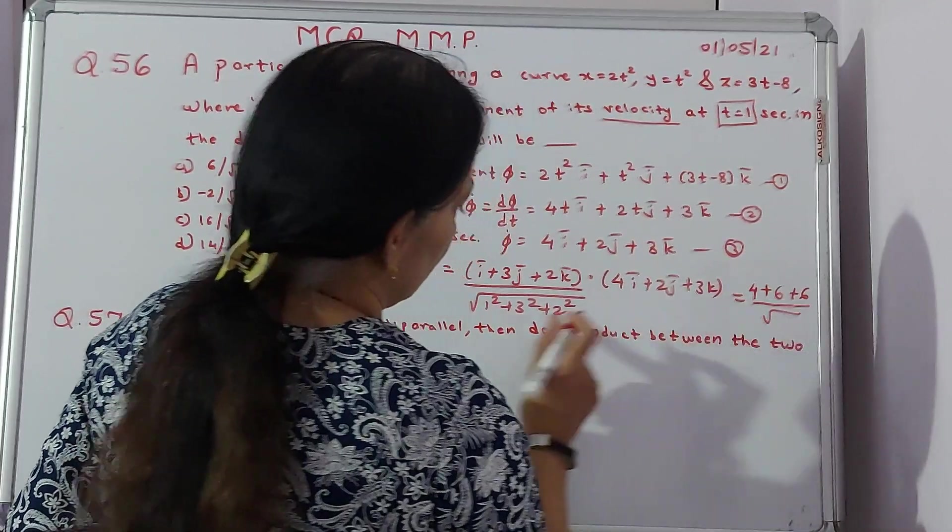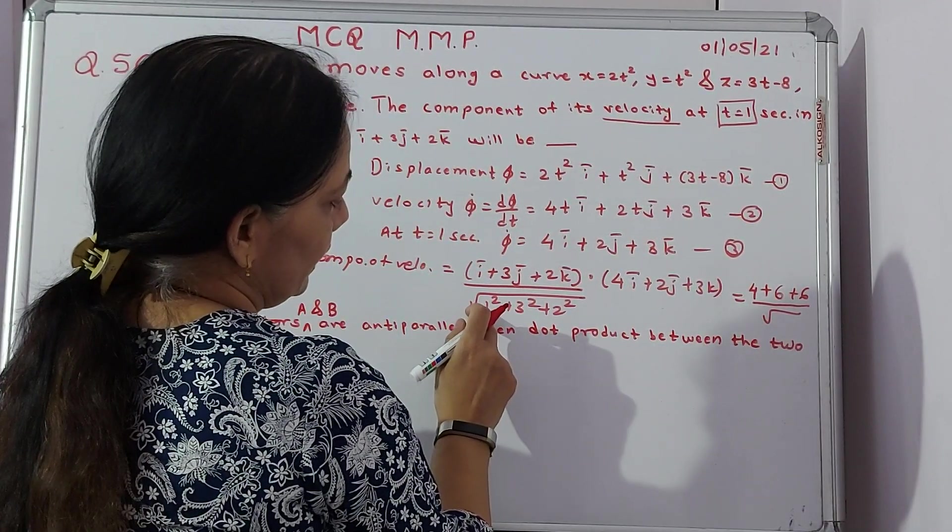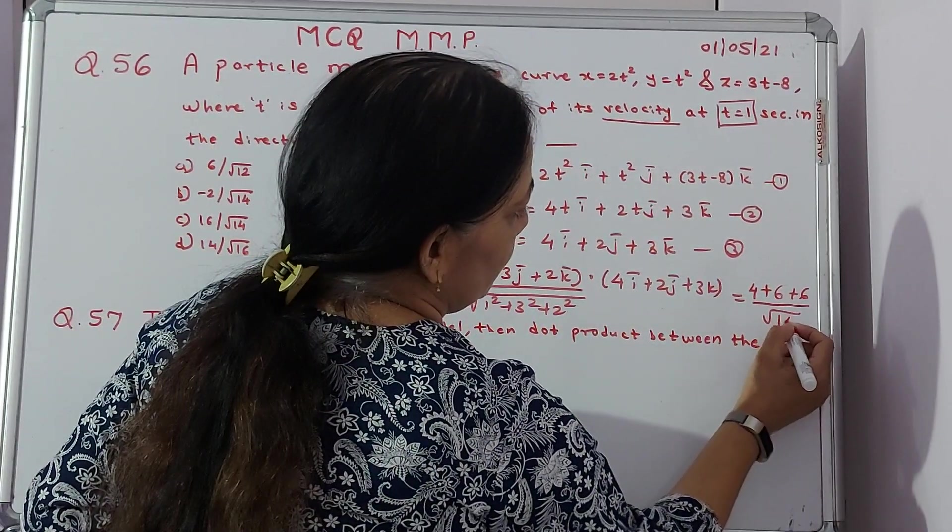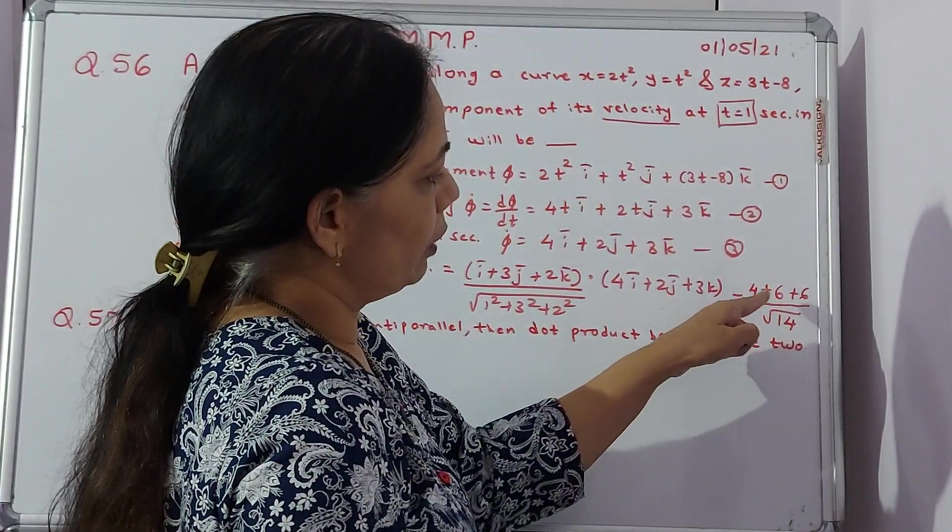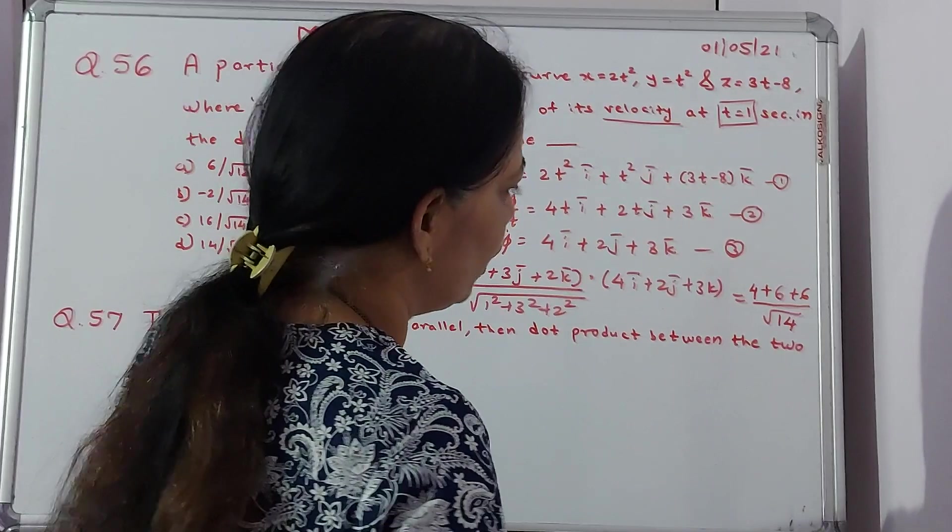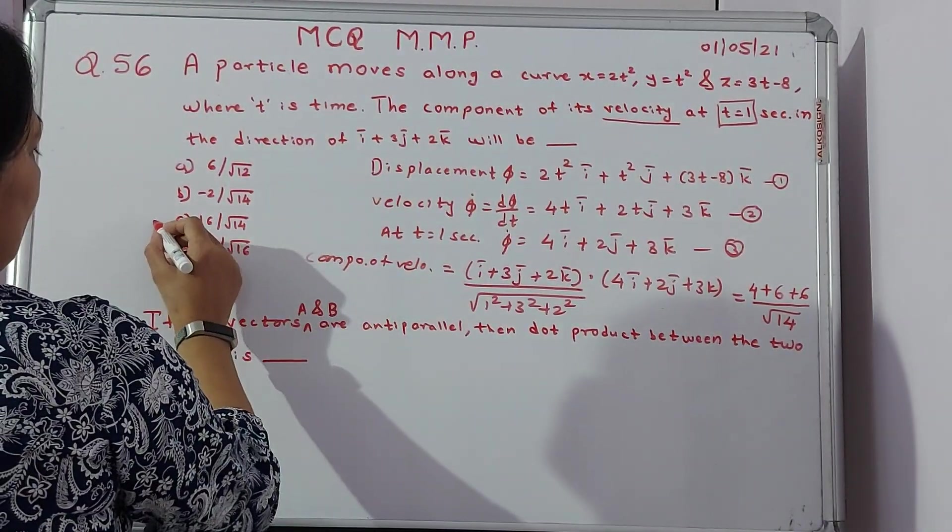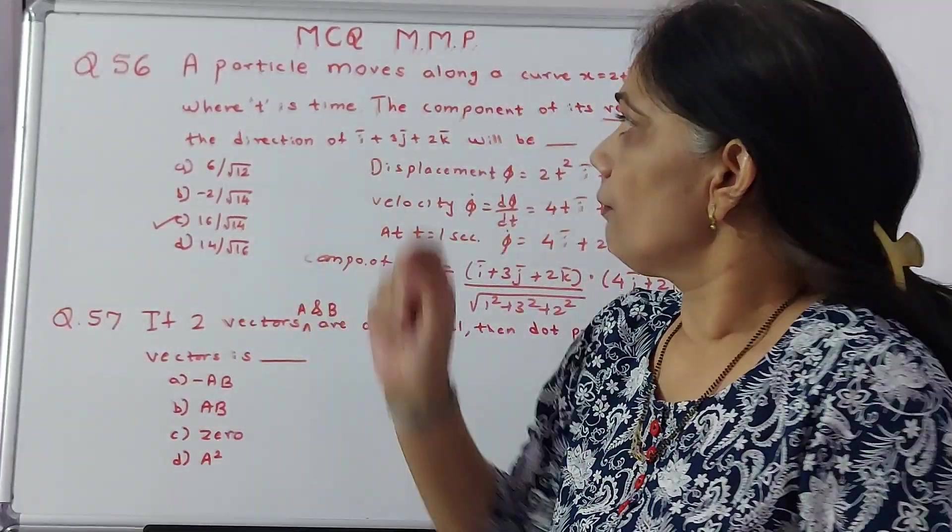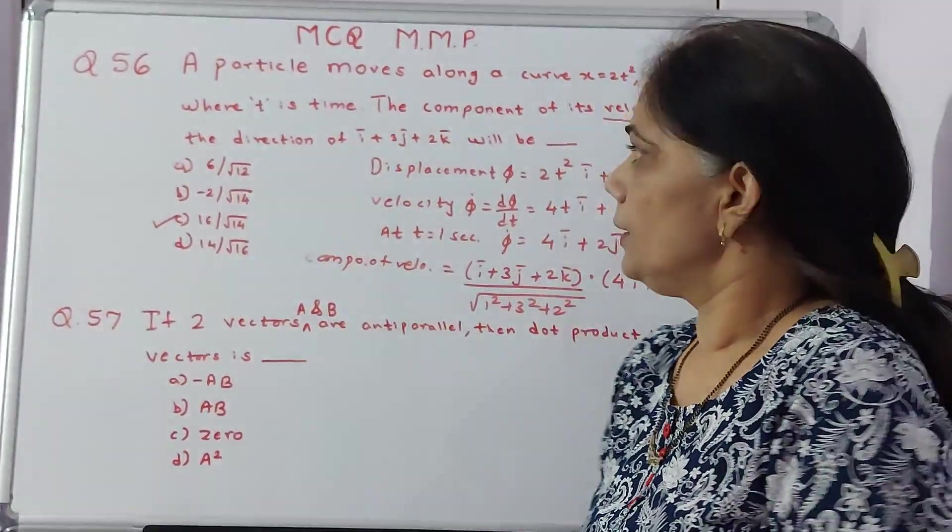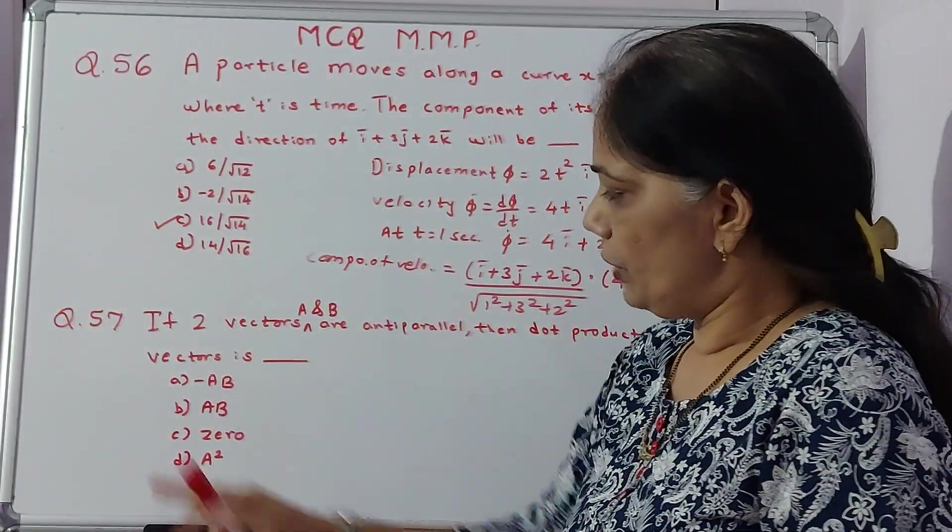9 plus 1 is 10, 10 plus 4 will be 14. So 6 plus 6 is 12, 12 plus 4 is 16 by under root 14. Exactly answer C is correct as far as question number 56 is concerned. We move to the 57th question.